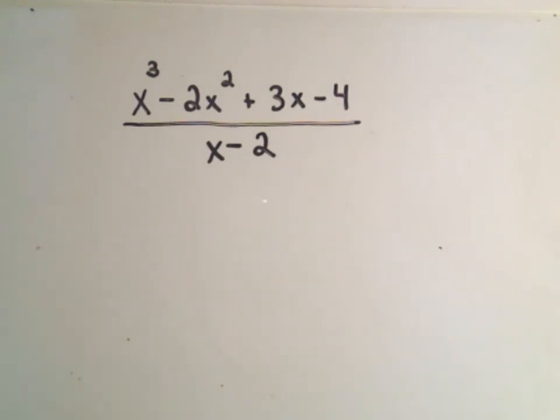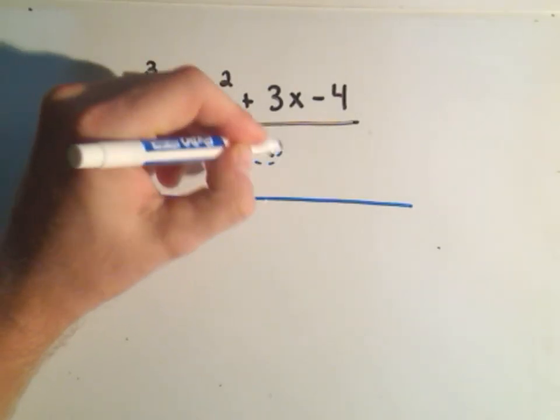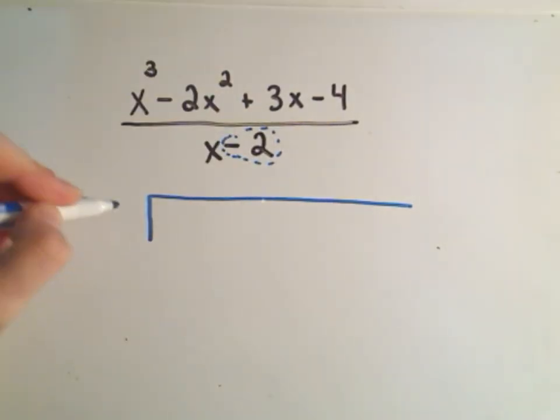What you do in this case is whatever we're dividing by, notice there's a minus 2, it's x minus 2, we actually take the opposite sign and we'll use positive 2. And that's what you stick outside.